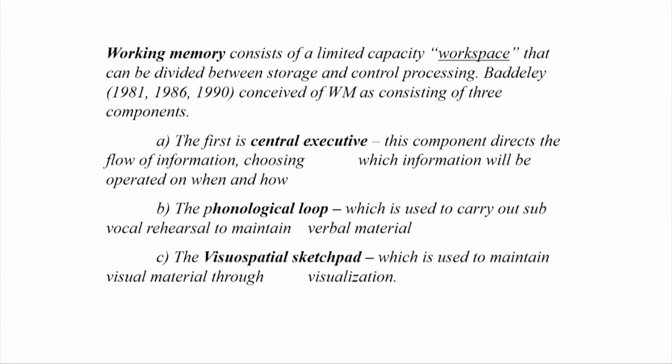For visual information and the visual sketchpad, a similar experiment was done. It was found that the complexity of the visual system determines the span — if the system people had to look at was simple, it was easier to relate back the information. But if the information was complex, it was difficult to recall. Working memory consists of a limited capacity workspace divided between storage and controlled processing — the central executive directs the flow of information, choosing which information is operated on, when, and how.